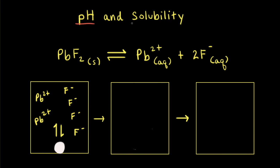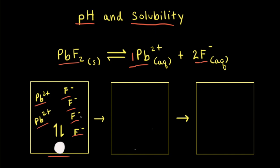Changing the pH of a solution can affect the solubility of a slightly soluble salt. For example, if we took some solid lead(II) fluoride, which is a white solid, and put it in some distilled water, the solid would reach an equilibrium with the ions in solution. Lead(II) fluoride forms lead(II) plus ions and fluoride anions in a one-to-two mole ratio, so two Pb²⁺ ions require four F⁻ anions. At equilibrium, the rate of dissolution equals the rate of precipitation, and the amount of solid and the concentration of ions in solution remains constant, forming a saturated solution of lead(II) fluoride.